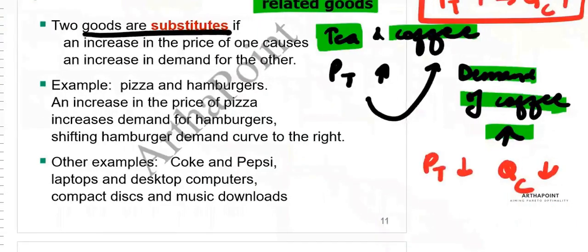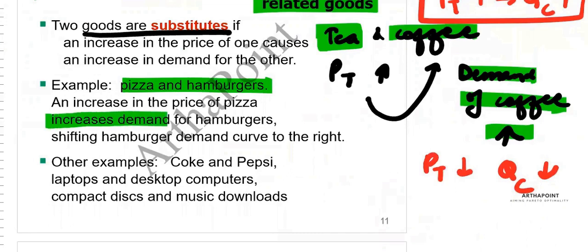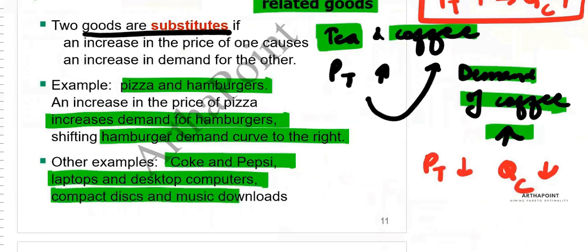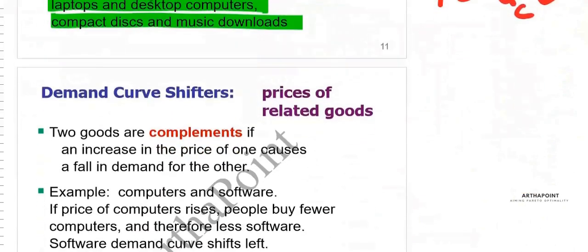For example, pizza and hamburgers: when the price of pizza increases, people shift towards hamburgers, increasing the demand of hamburgers and shifting the hamburger demand curve to the right. Other examples of substitutes include Coke and Pepsi, laptop and desktop, and compact disc and music downloads.